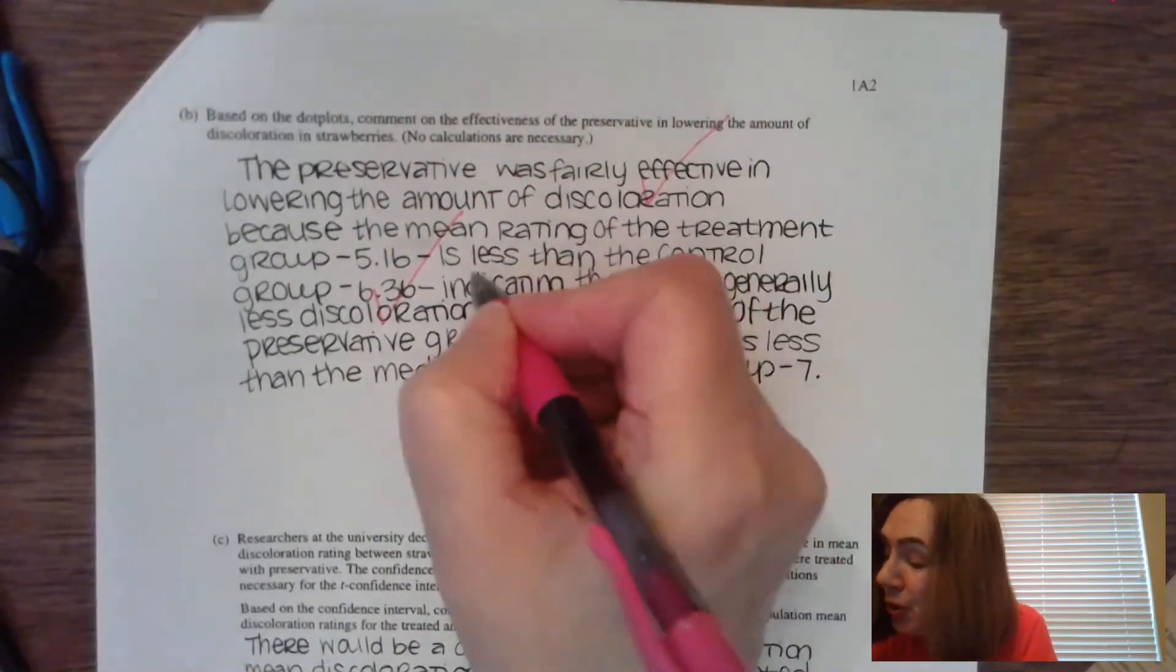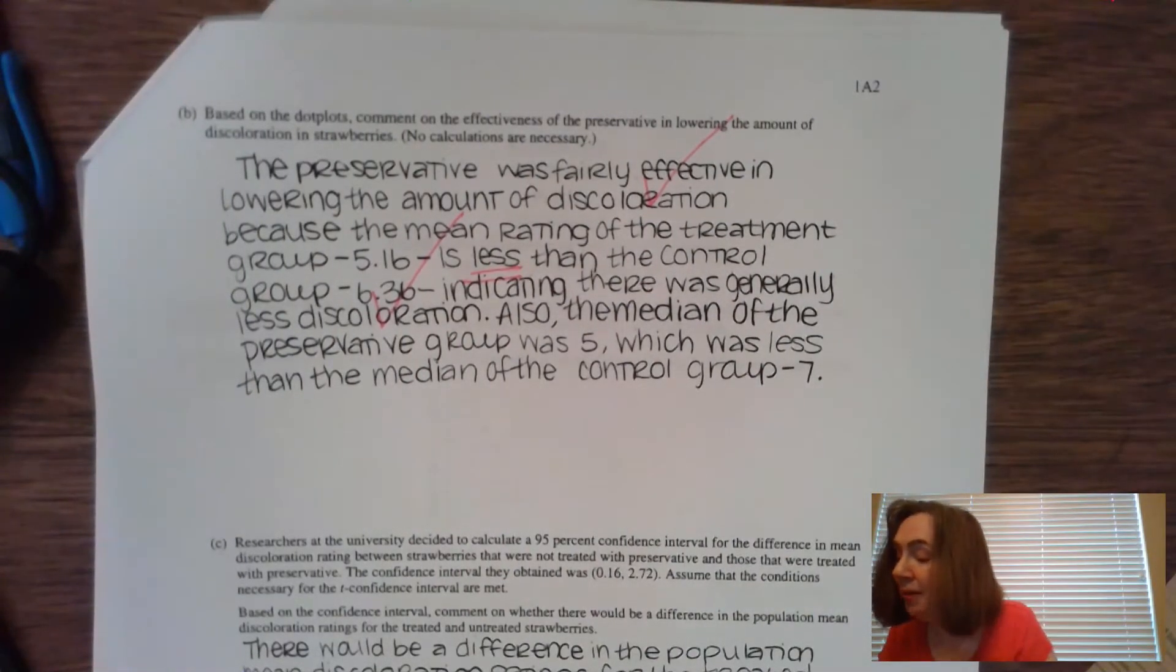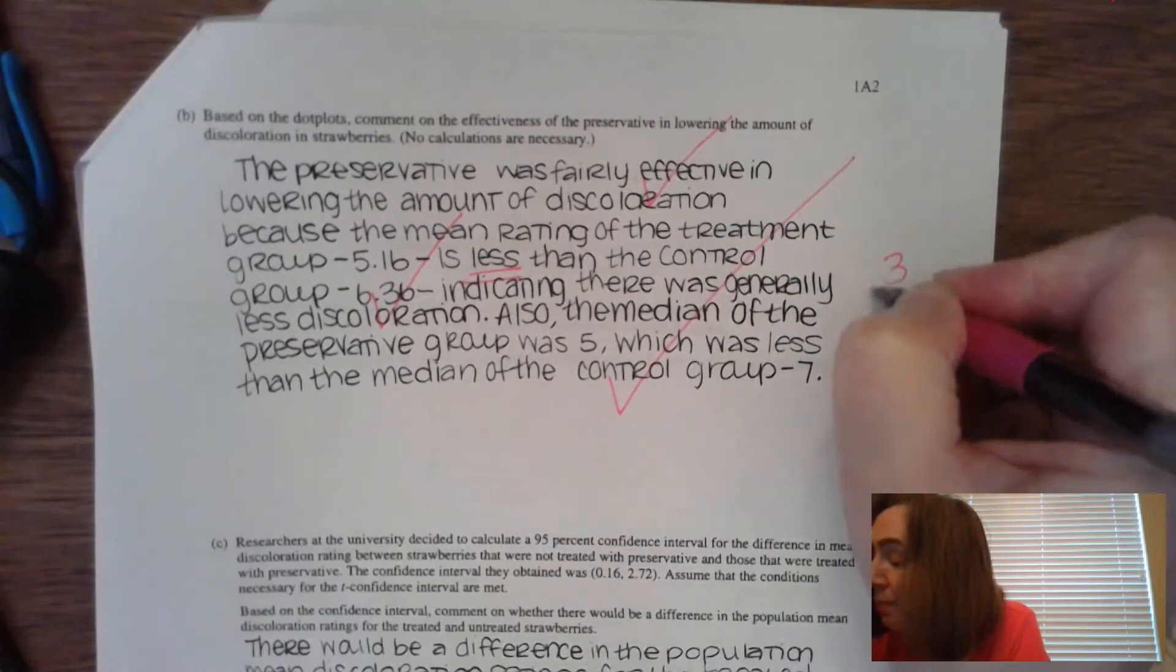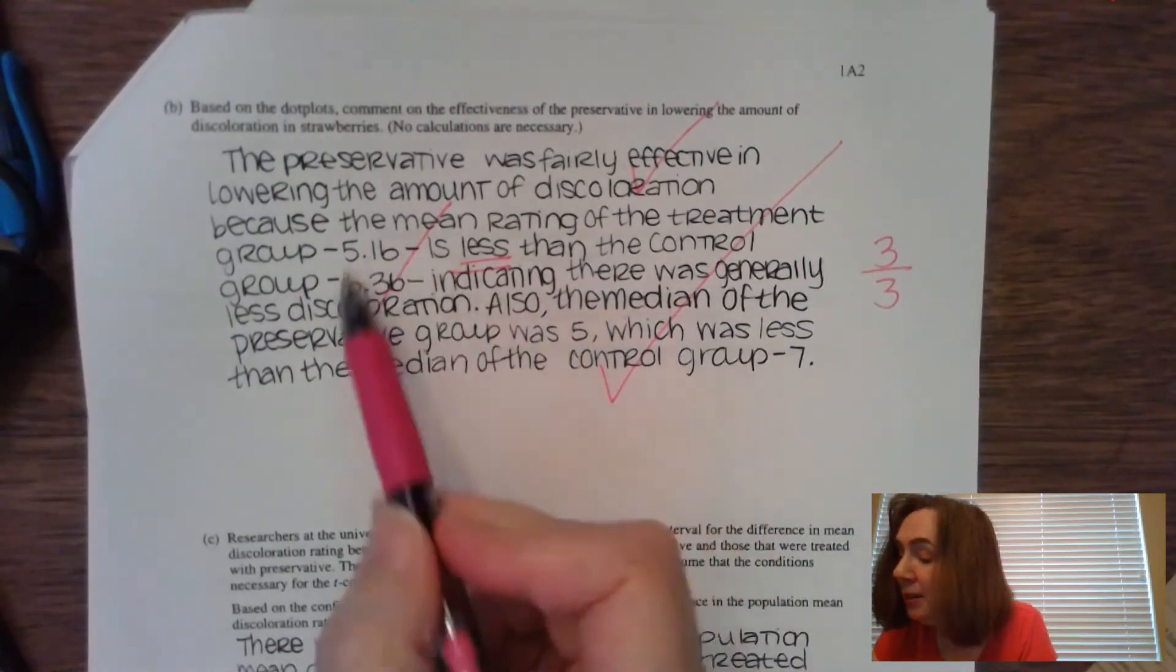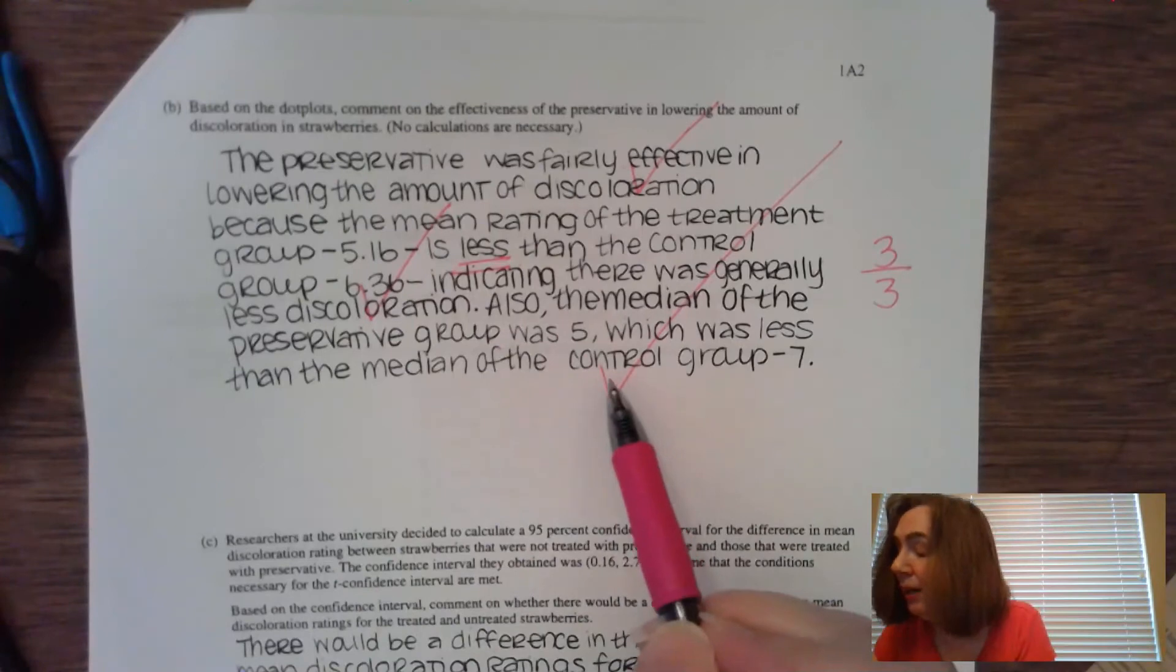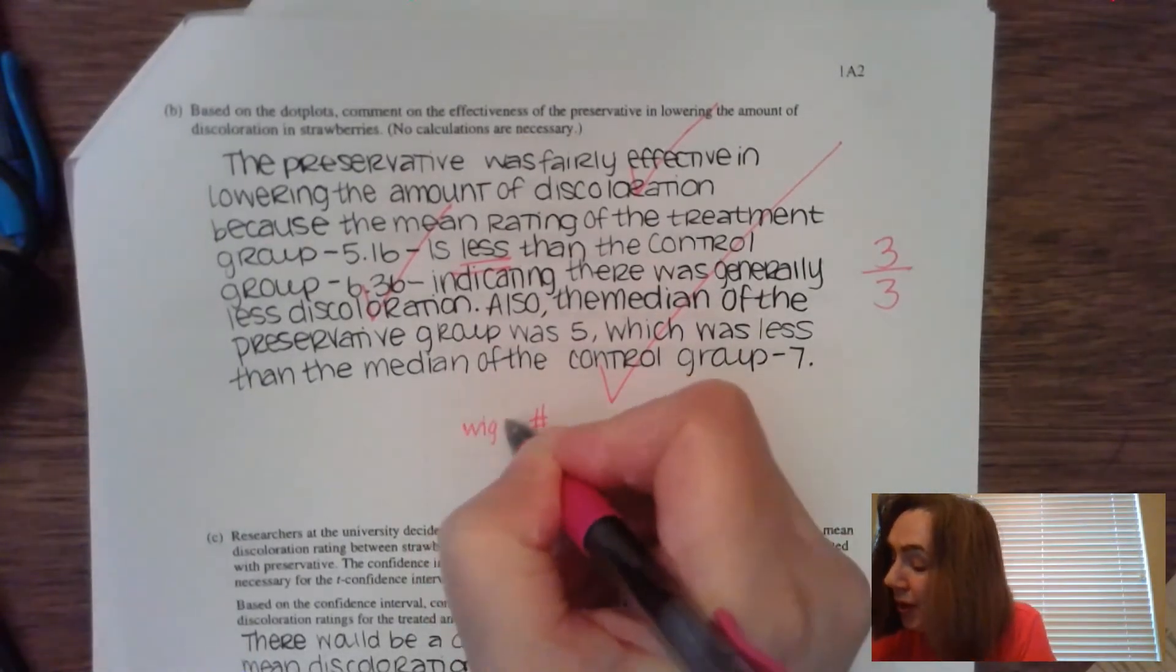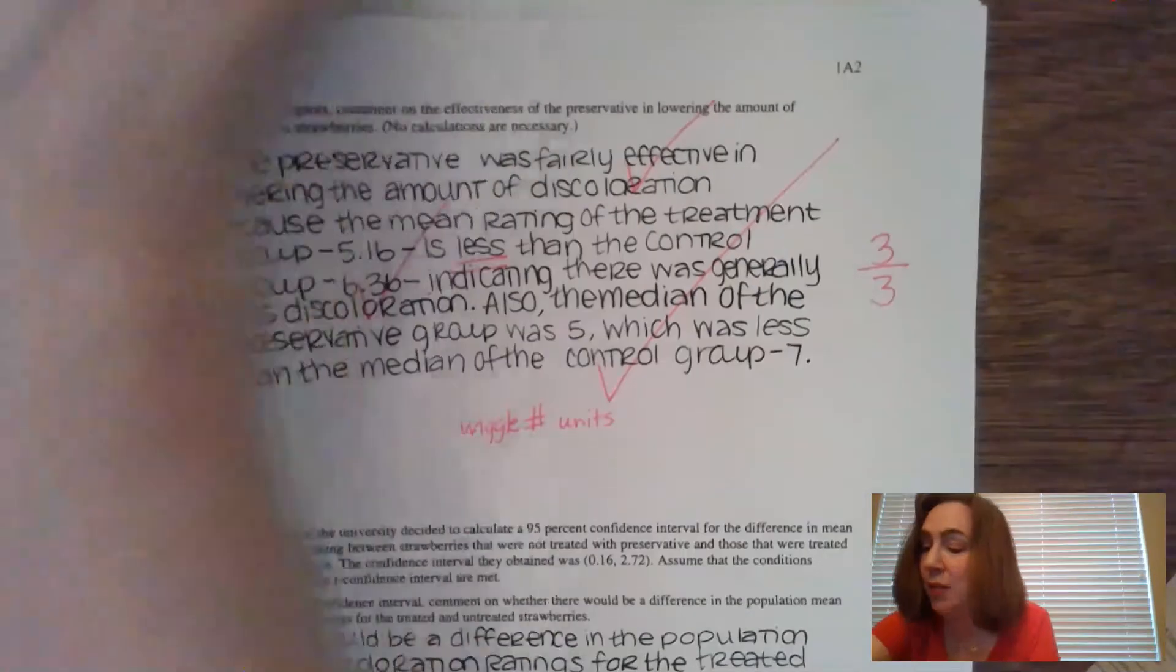They actually typed these into the calculator. But guys, you can actually, in this case, it says no calculations necessary. I would go ahead and be specific. I would commit to a number for the discoloration rating, and I would say that the discoloration rating for the treatment group is about five discoloration rating units, which is less than that for the control group, which is about 6.5 rating. So making sure that you compare the centers using a math comparison word, you're going to get that justification credit there. And the last thing here is, do you have context? Do you talk about preservatives, strawberries, discoloration ratings? This person does. So that means my person got three out of three on this particular problem. Now they went and did mean here, and then they did medians down here. You don't have to do them both. Either one is going to be fine. Generically talking about the middles or the centers is going to be fine too, but make sure you commit to a number, make sure you wiggle the number, and make sure you have units behind the number.